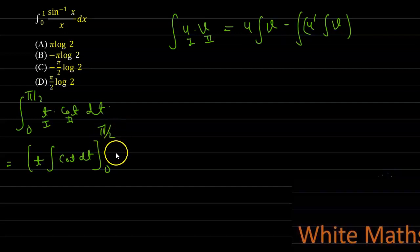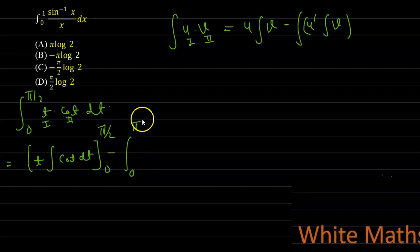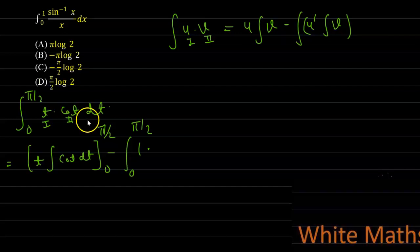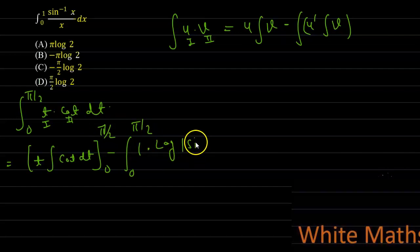Applying this: the first function t as it is, times the integral of cot t, with limit 0 to pi by 2, minus the integral from 0 to pi by 2 of the derivative of the first function t, which is 1, times the integral of cot t. The integral of cot t is log of mod sine t.